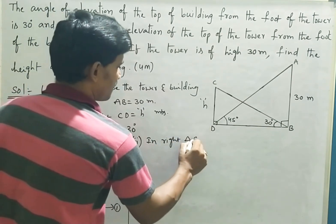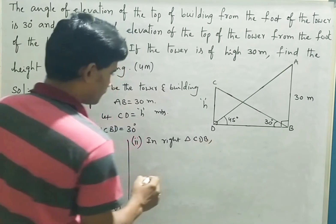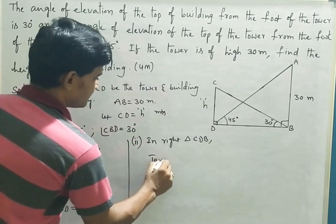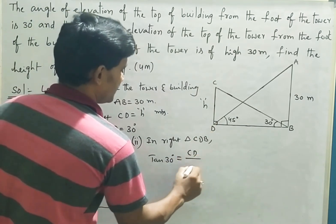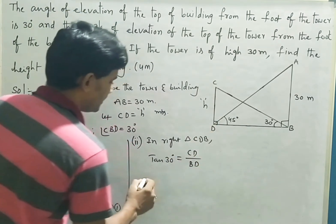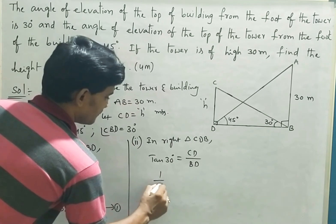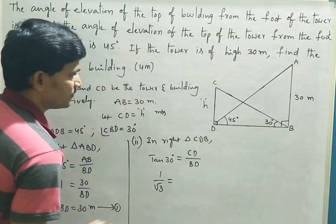Tan 30 degrees is equal to opposite to 30, CD, per adjacent BD. Tan 30 means 1 by root 3 is equal to CD.